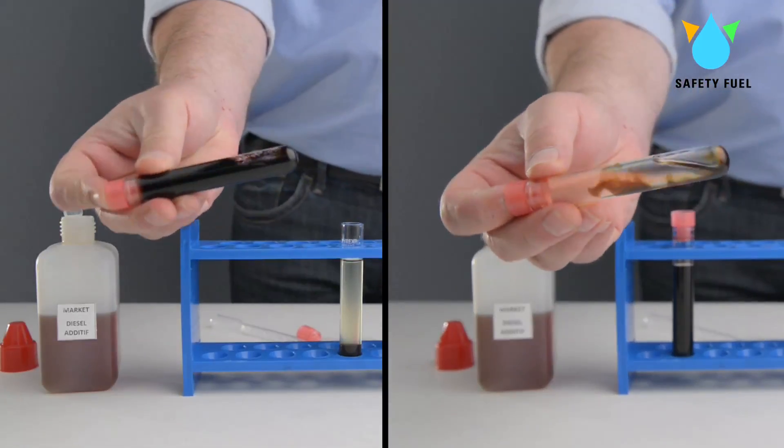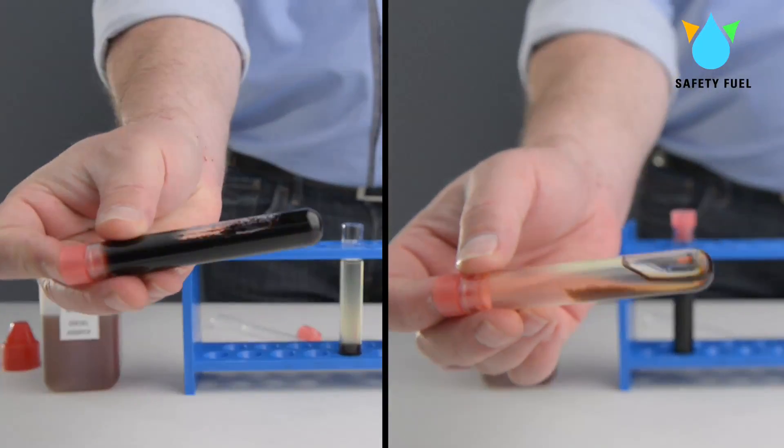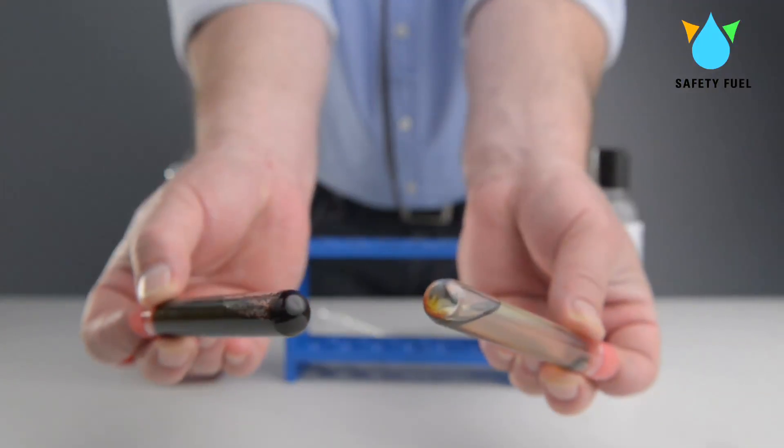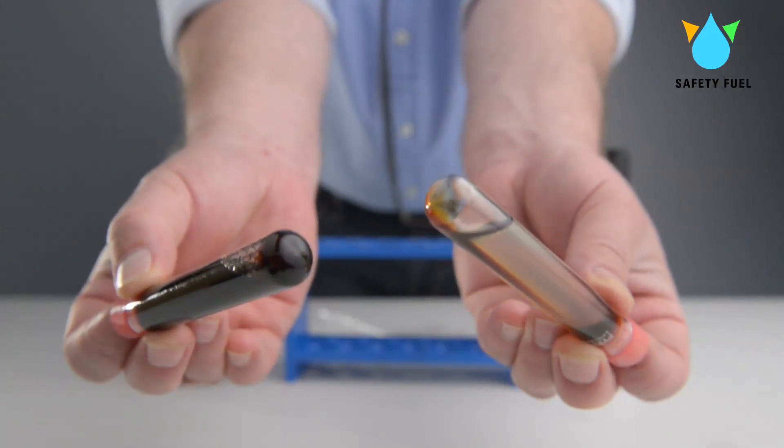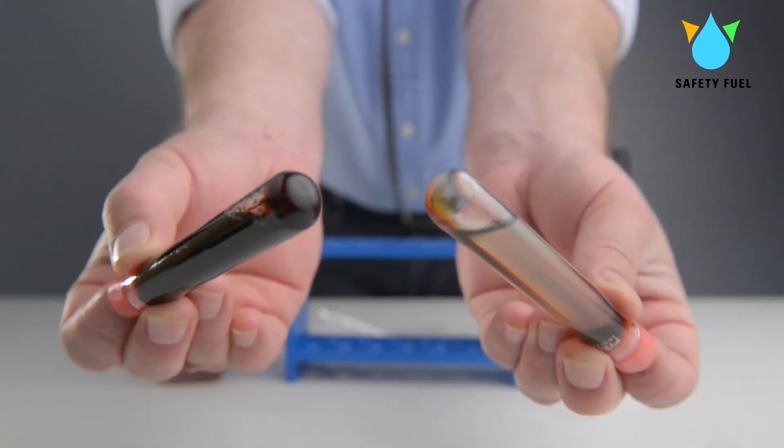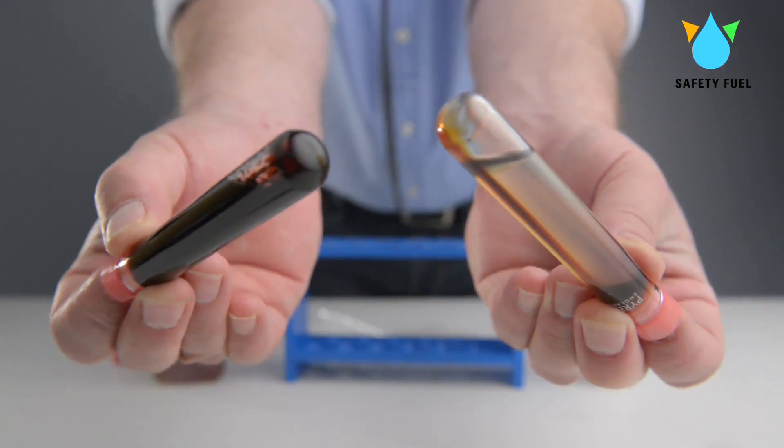We shake both test tubes. In the test tube with traditional additive we note only a limited dissolving of deposits and varnishes. In the SafetyFuel test tube the black deposits and varnishes are almost completely dissolved.